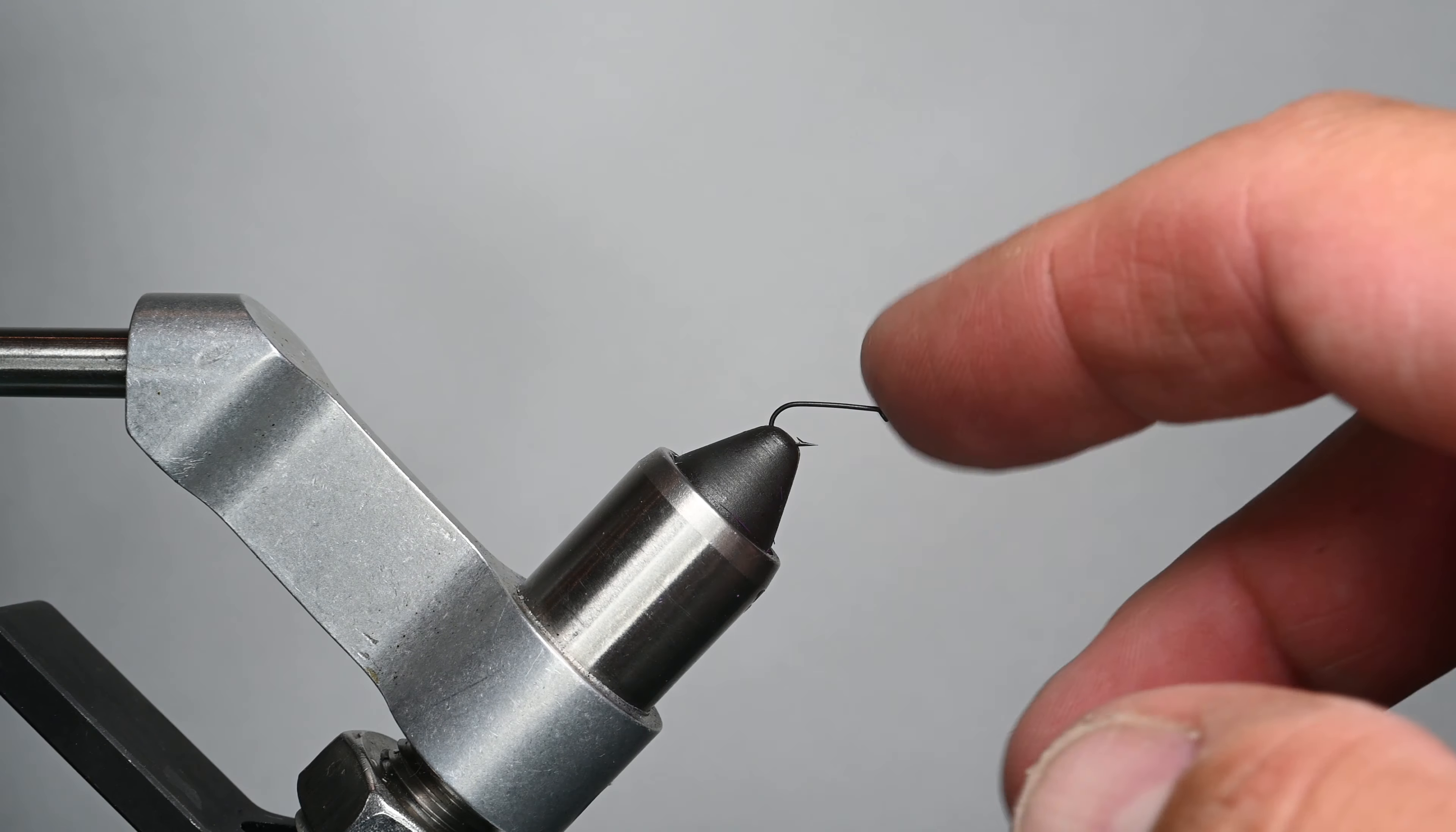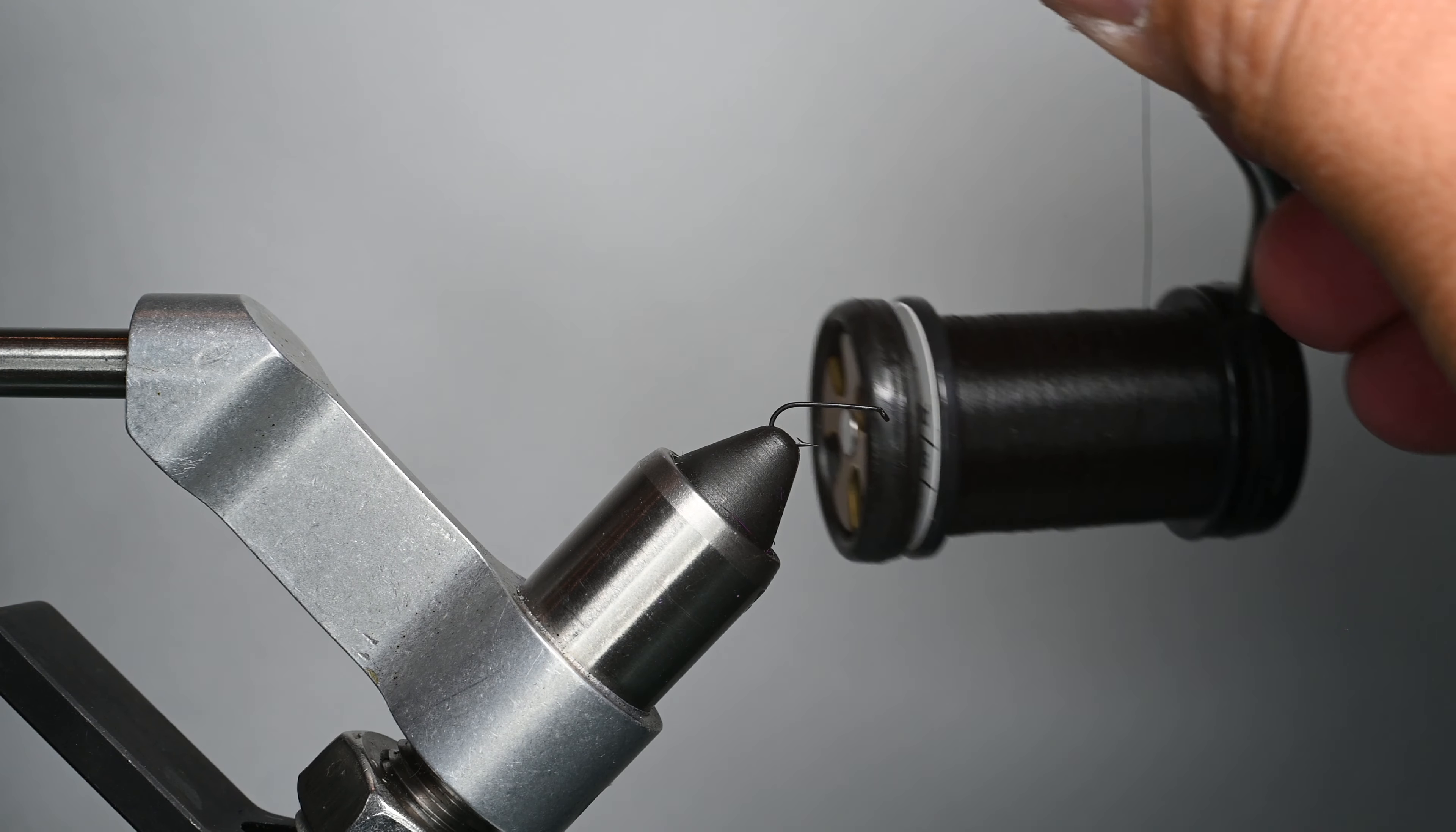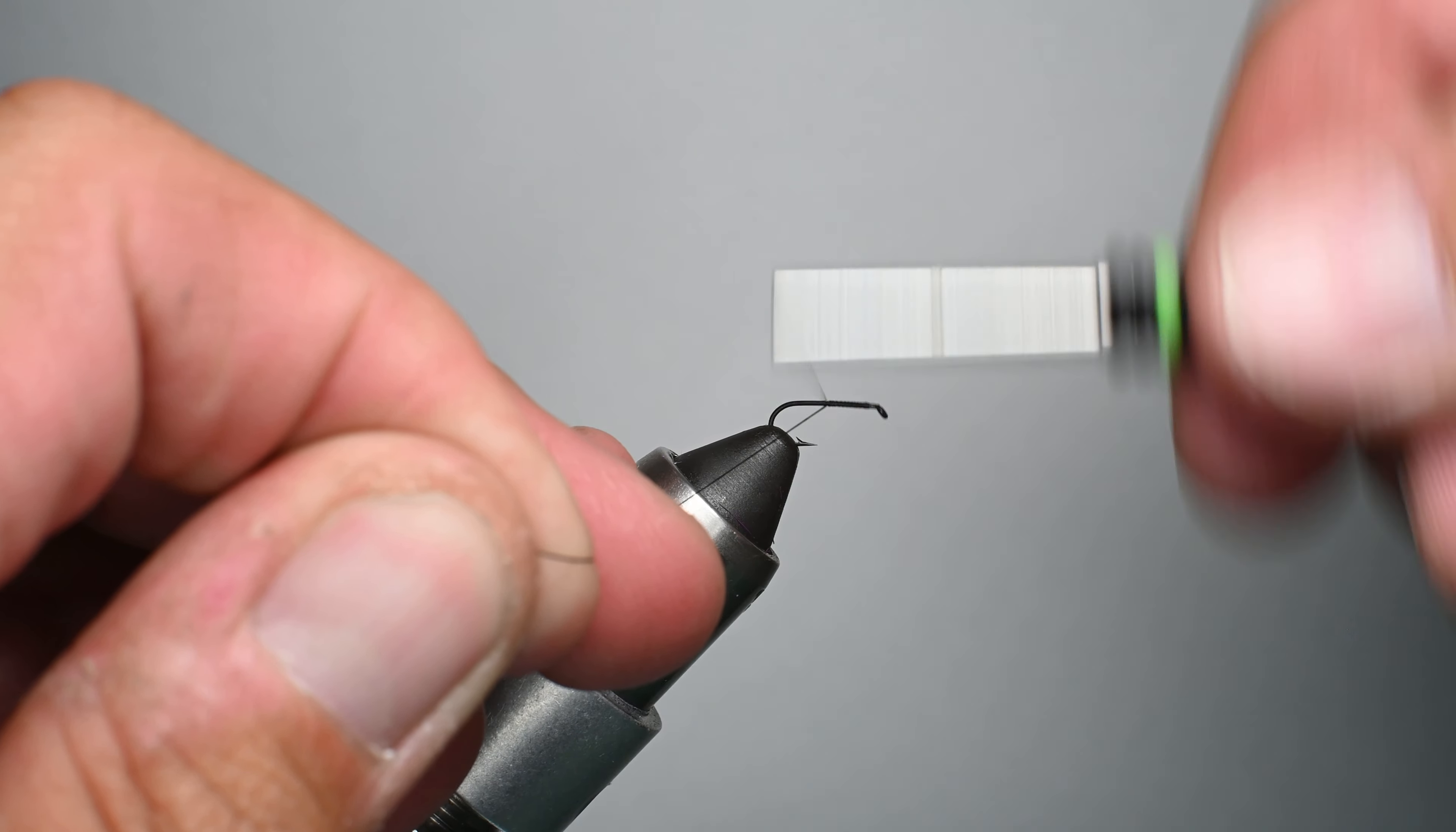This is a size 16 stealth hook and we're going to be using some Semperfli 8-aught wax thread. I'm going to start our thread with a little bit of gap behind the hook eye and work my way down the shank of the hook, ending at the point, somewhere between the point and the bend.